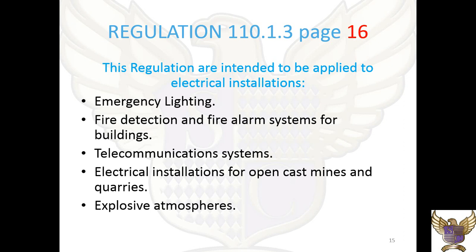Now if we look at regulation 110.1.3, which is located on page 16, this regulation — the 18th wiring regulations — is intended to be applied to electrical installations which will include the following: emergency lighting, fire detection and fire alarm systems for buildings, telecommunication systems, electrical installations for open cast mines and quarries, and explosive atmospheres.